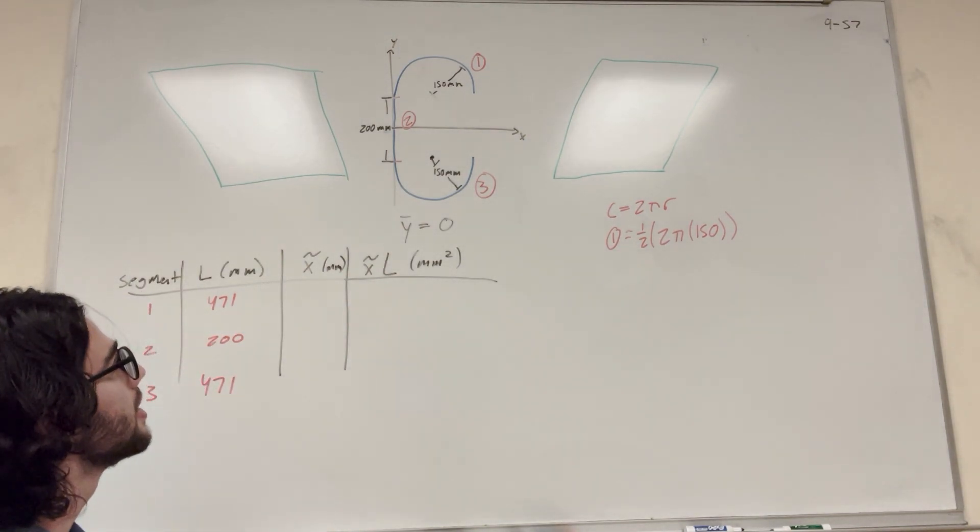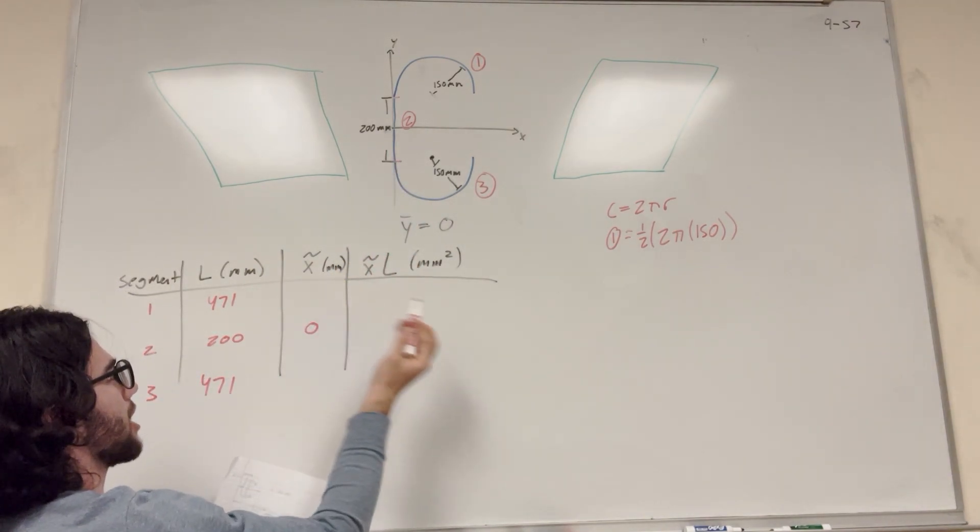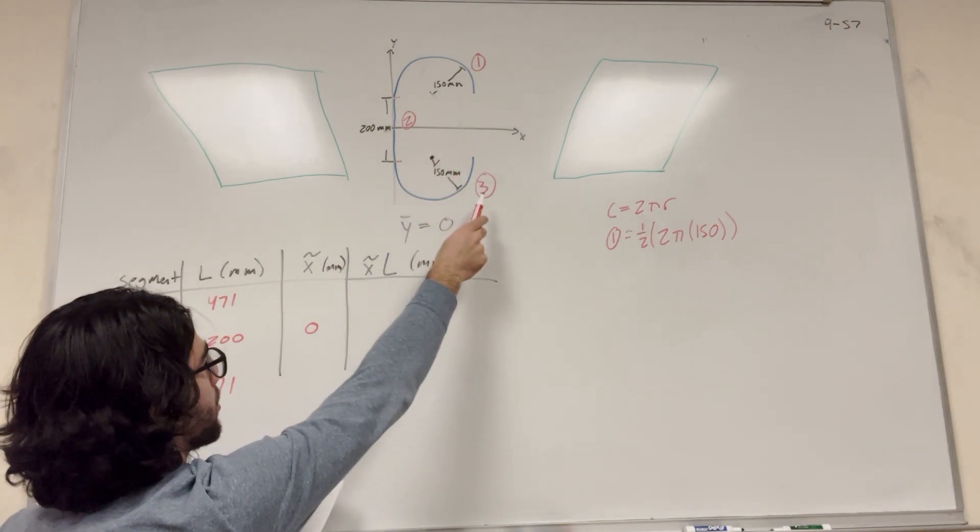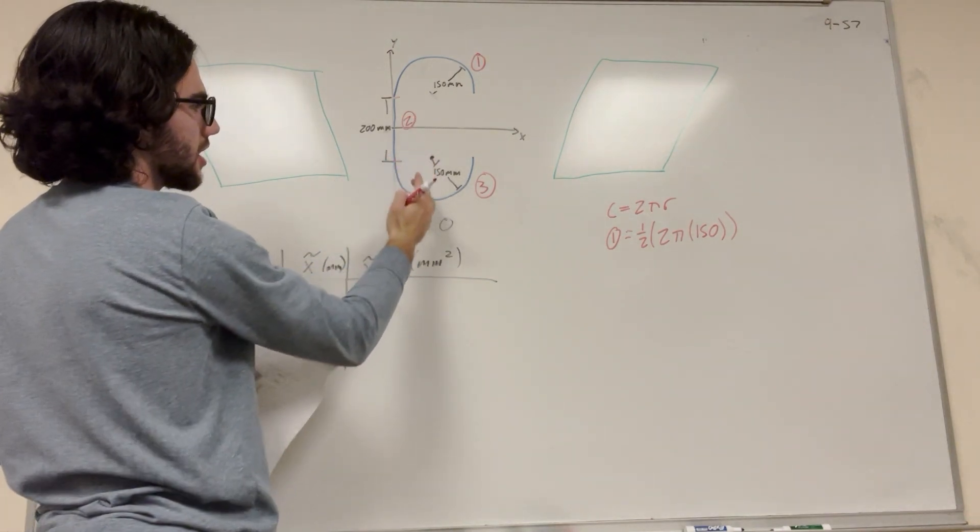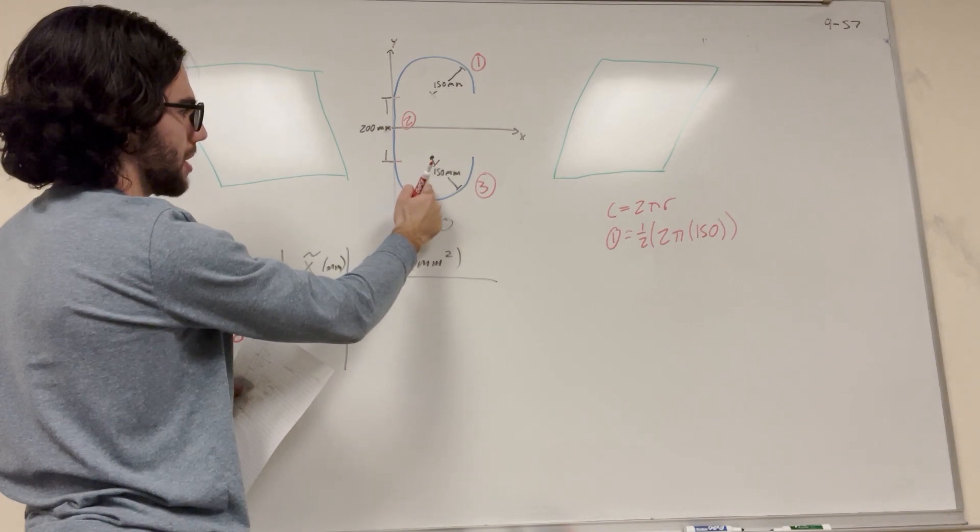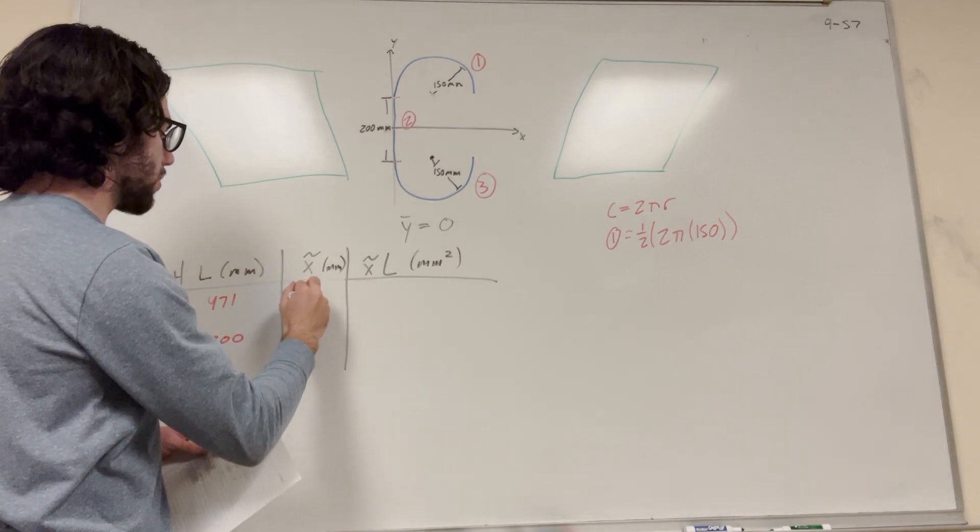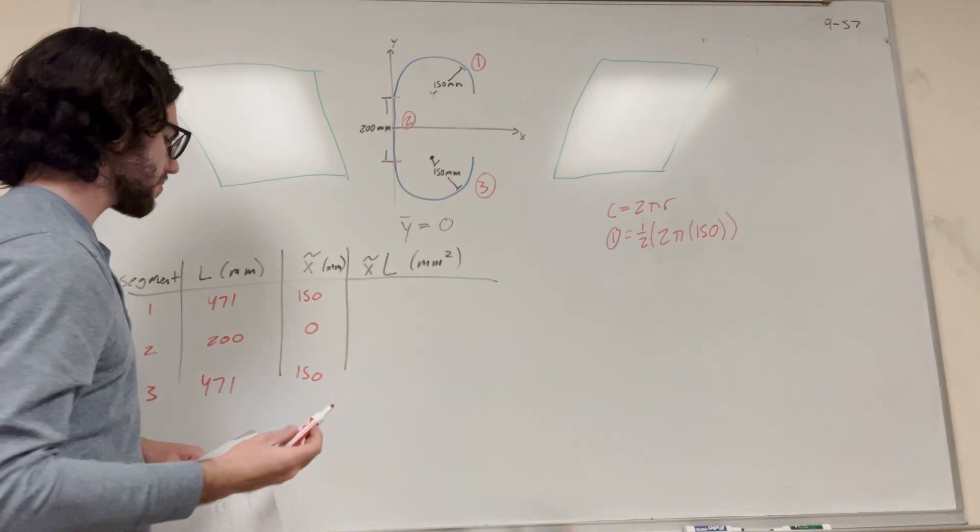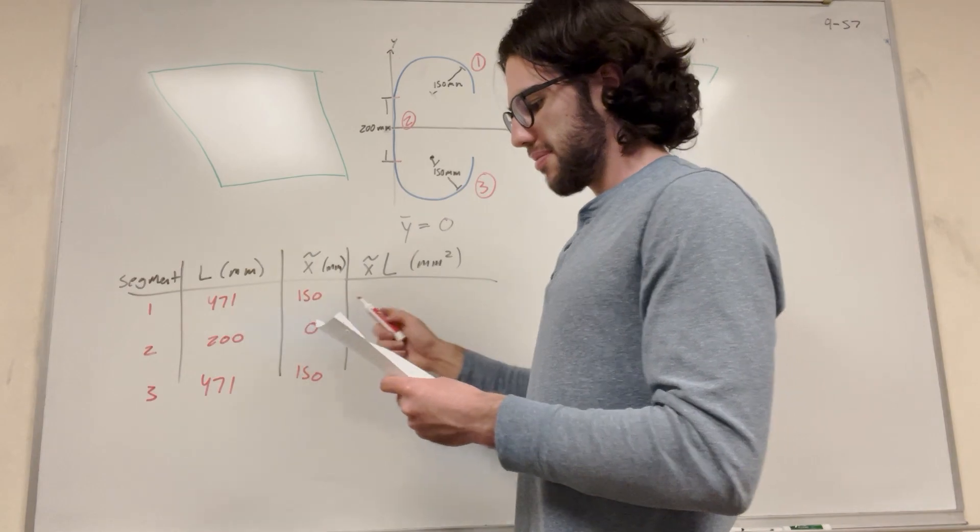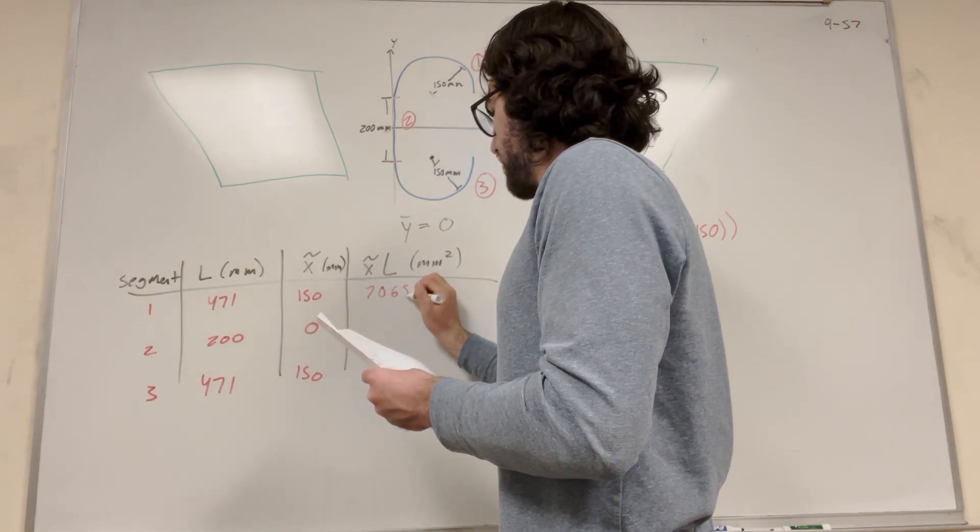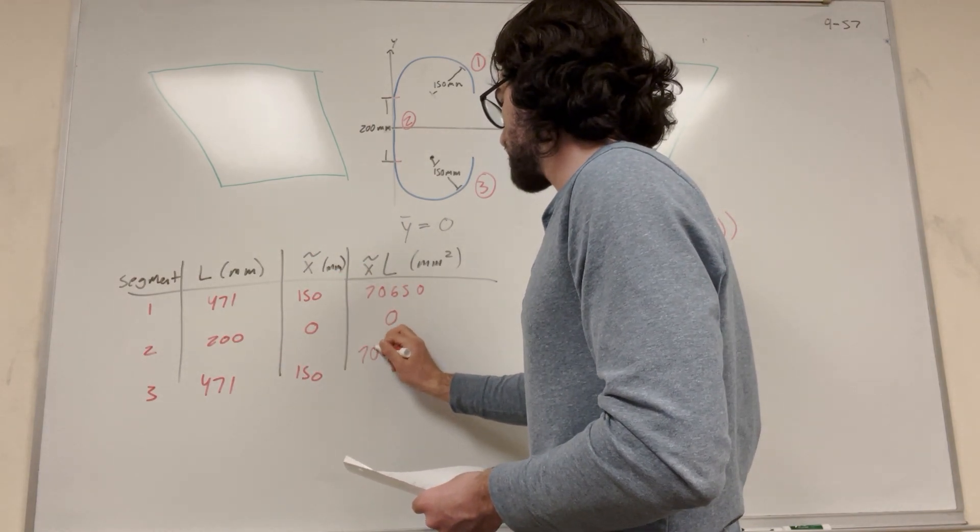Now we need to find the x center of mass. For segment two, that's going to be easy enough. It's a straight line, and it's on x is equal to zero. So we know that its center of mass is going to be at x is equal to zero. For one and three, we can basically make the assumption, because this is symmetric across the center of its circle here. So its center of mass is probably going to be in the center, which is going to be the radius of the circle, which is 150 millimeters. So x tilde is 150, x tilde is 150. Now we're going to multiply these numbers together. So x tilde times L is going to be 7,650. 200 times 0 is 0. And then same thing here, 7,650.